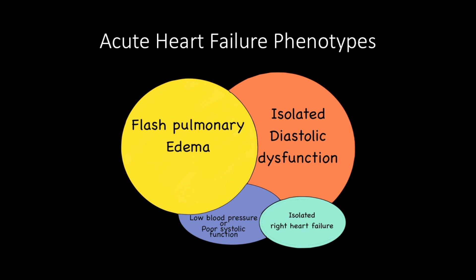The next phenotype is isolated diastolic dysfunction, which is seen more commonly in elderly patients. The presentation consists of a plethoric IVC and normal systolic function with pulmonary edema. Lastly, isolated right heart failure has a similar presentation to isolated diastolic dysfunction, but pulmonary edema is absent.